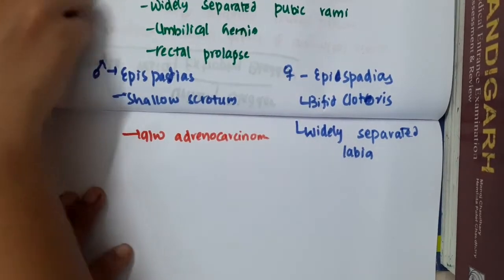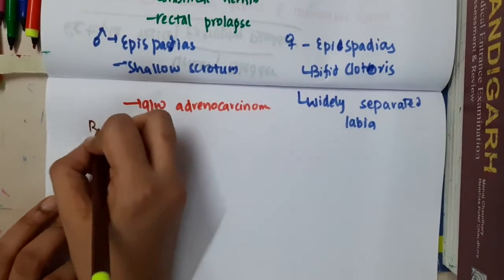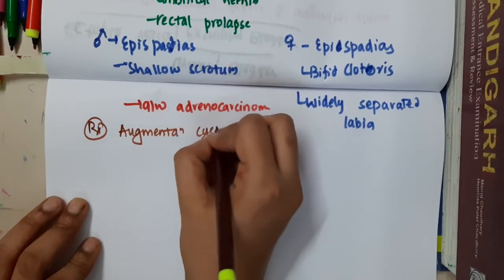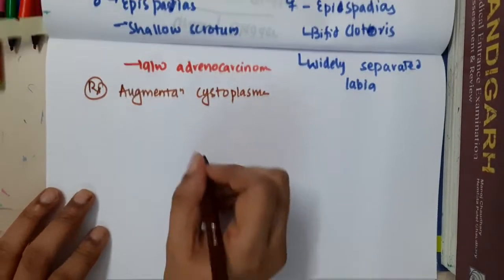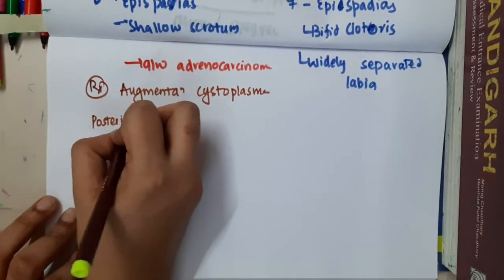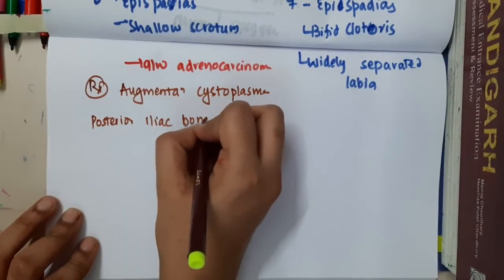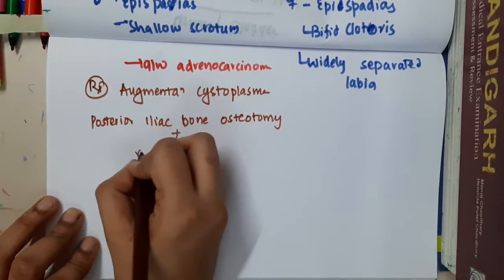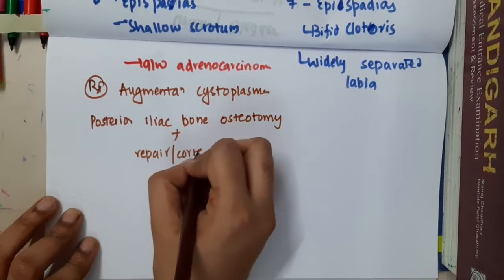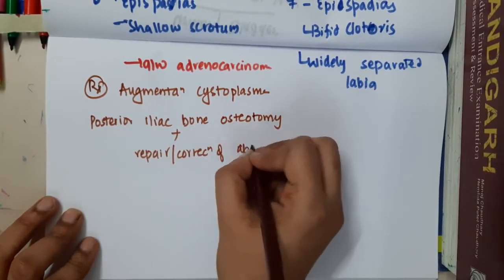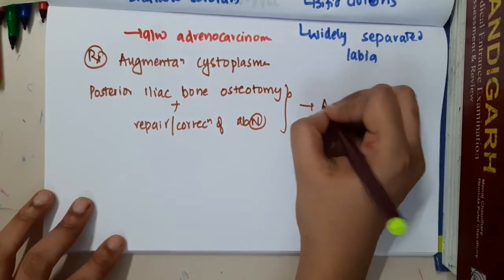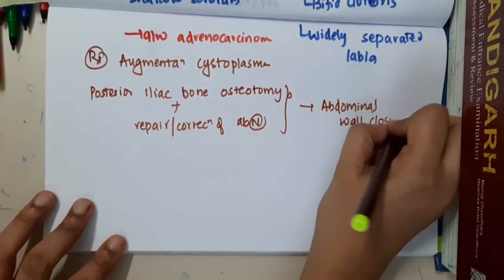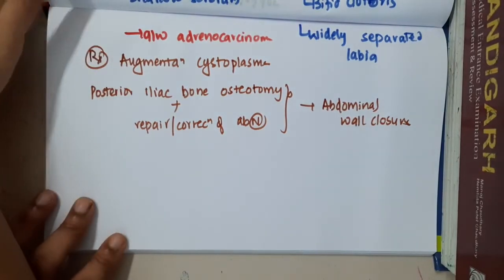Regarding management, treatment involves augmentation cystoplasty, posterior iliac bone osteotomy with repair and correction of abnormalities, followed by abdominal wall closure.